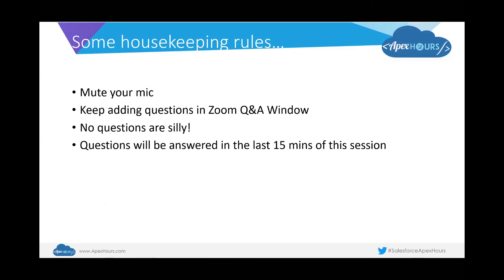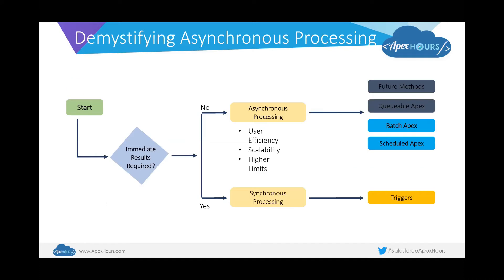All this while, we have been learning about processing that is immediate. Before we get bogged down with this slide, let's just talk about synchronous and asynchronous processing. Basically, every time we've talked about writing some kind of Apex code, we would run it in some form — whether it was invoked by a trigger or done through the developer console — and the results were almost instantaneous, immediate.